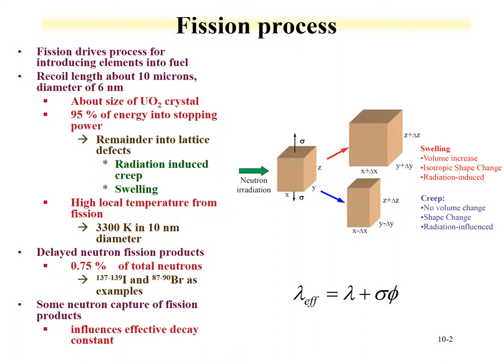Another process that occurs in fission is relatively local high temperature. The temperature at the coolant-cladding interface can be on the order of hundreds of degrees, where the local temperature of fission can be on the order of 3,000 degrees. We've already talked about other processes associated with fission in fuel, including delayed neutrons and the fact that some fission products will undergo neutron capture.